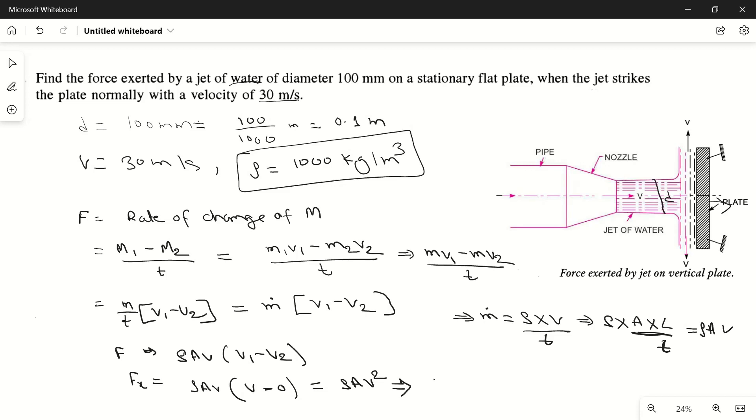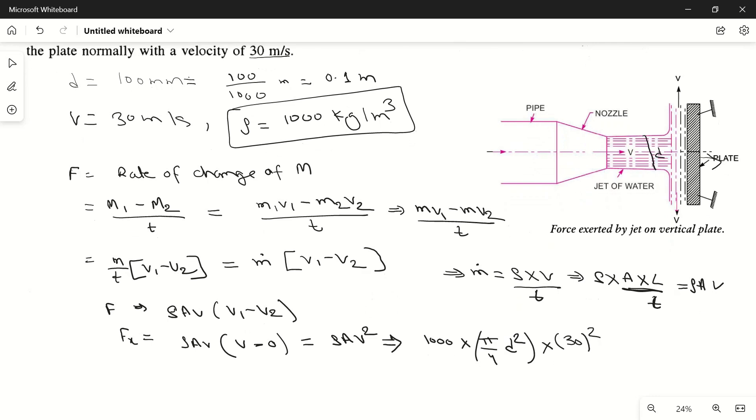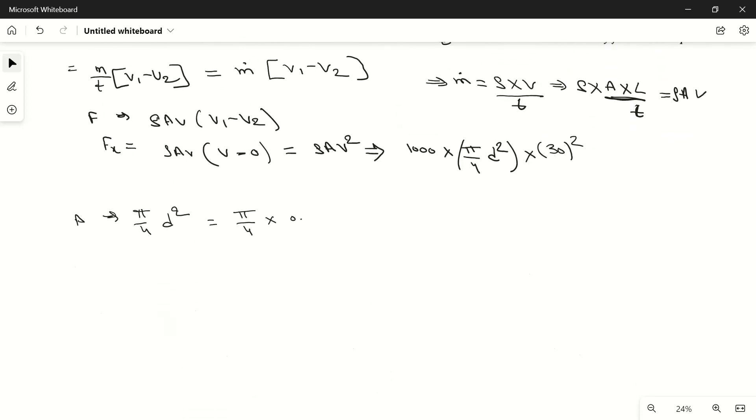Rho is 1000 into A. This is pi by 4 d square for circular cross section. Now V is 30 meters per second, so 30 square. Now we can calculate area. Area is equal to pi by 4 into diameter, diameter is 0.1 meters. 0.1 square, pi is 3.14. If you put all the values then you will find area is equal to 0.007854 meter square.